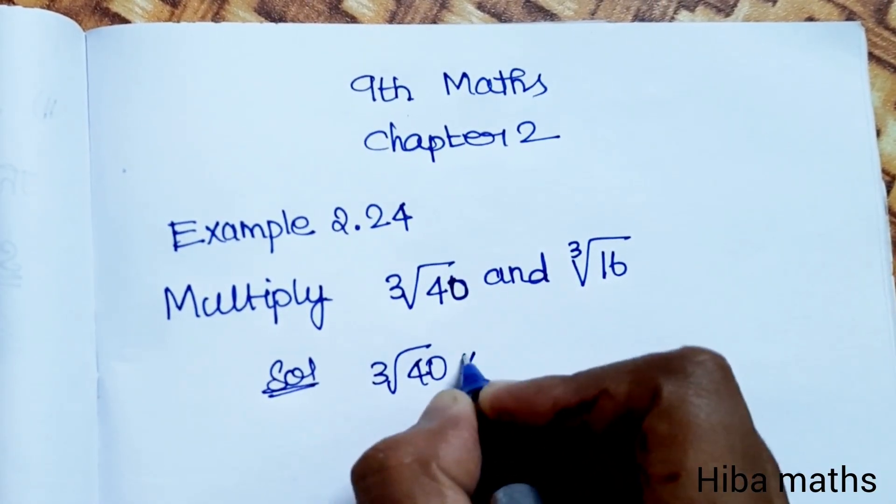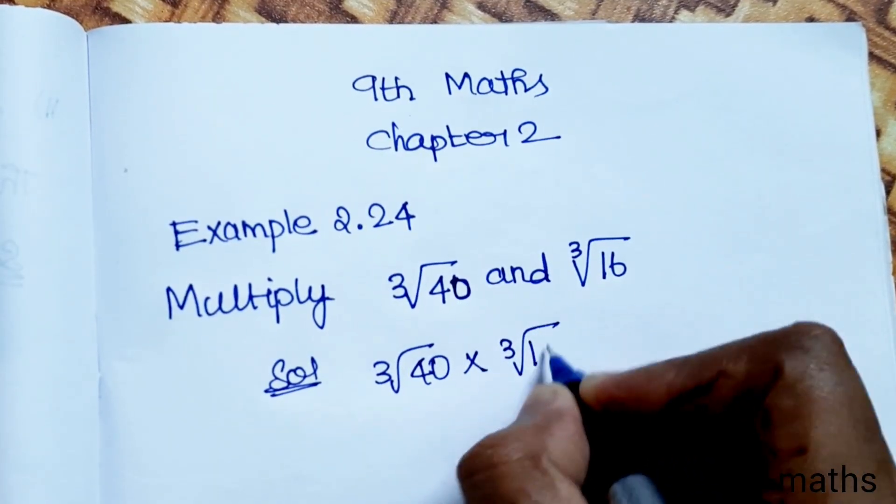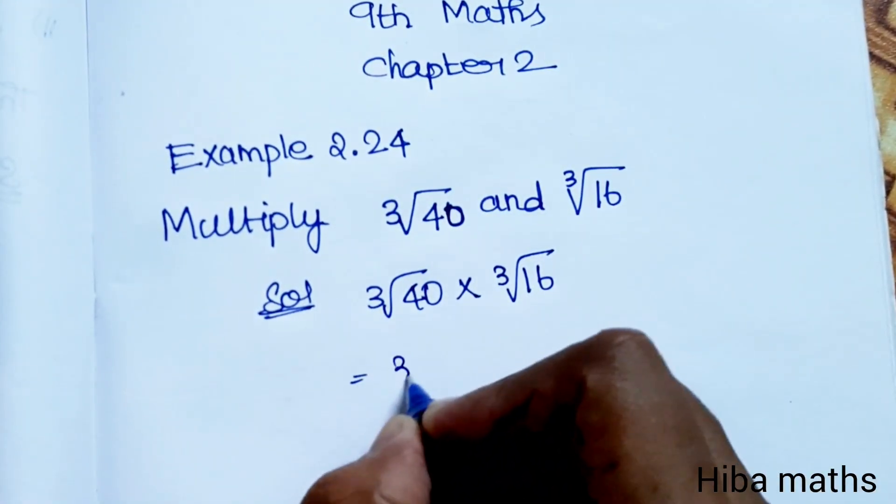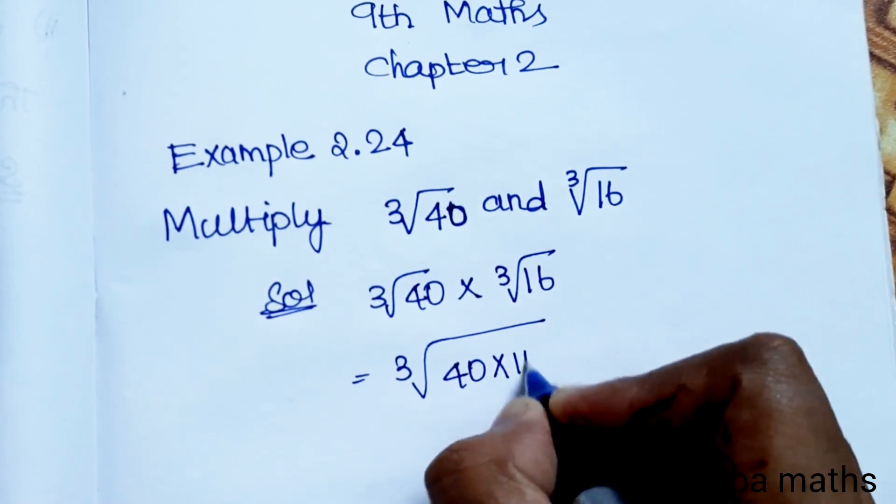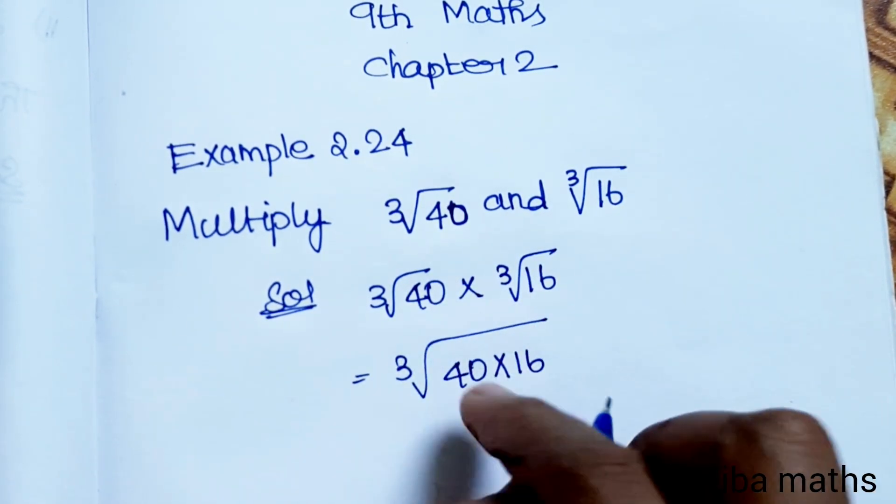Cubic root of 40 into cubic root of 16 equals cubic root of 40 into 16. You can multiply the numbers under the same root.